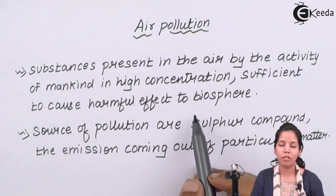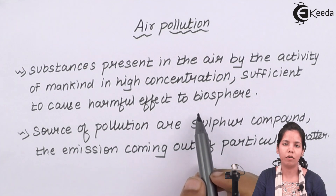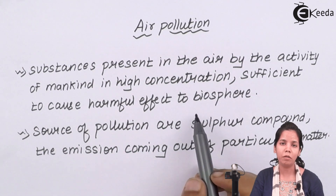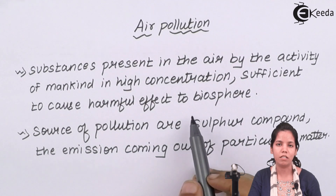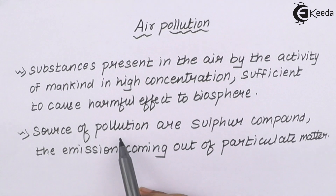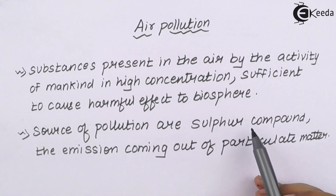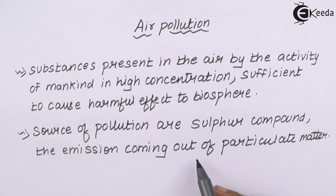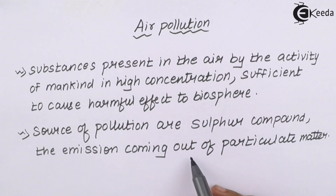For example, due to air pollution, acid rain is observed in certain parts of India. Even crops and human beings are getting respiratory diseases and disorders. Sources of pollution could be sulfur compounds, nitrogenous compounds, or any such things. In certain cases, burning or emission coming from particulate matter can lead to air pollution, and its side effects are very harmful in the long run.